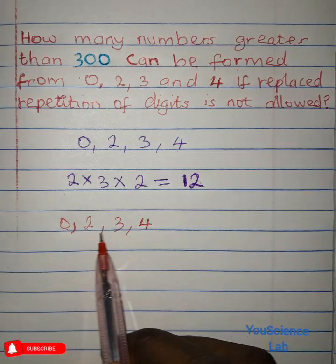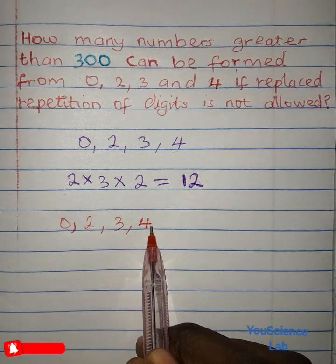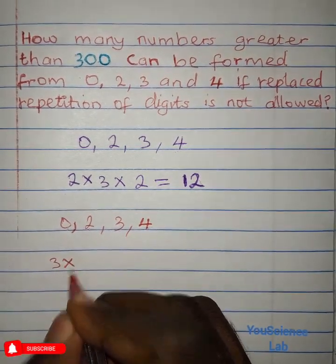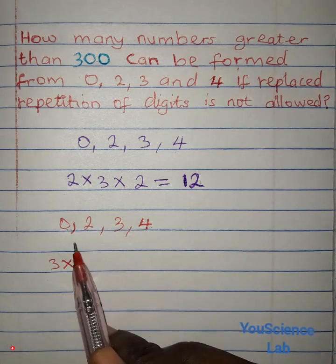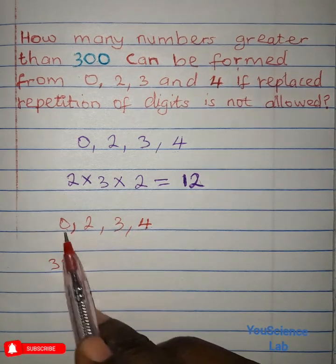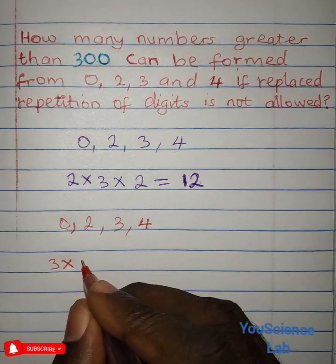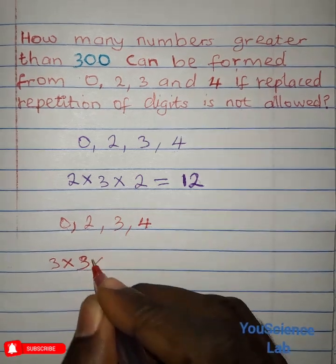So the digit can either start with 2, 3 or 4. So we have 3 digits to choose from. So I have 3 times. Because there is no repetition, if we pick one digit, now we are left with 3 digits because we will now include the 0. So the next digit we have 3 digits to pick from times.